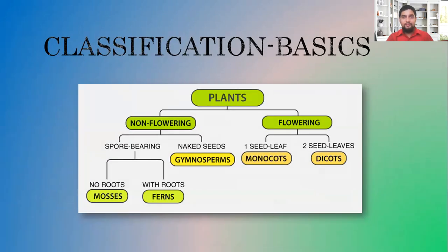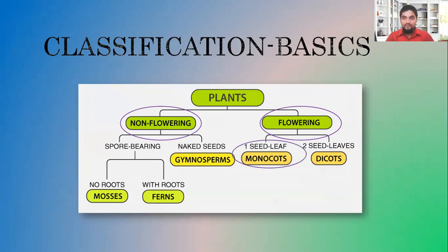We're now going to look at the basics of plant classification. Plants can be divided into non-flowering plants, which do not bear any flower, and flowering plants, which will bear flowers. Our main concern at CSEC Agriculture Science level will be the flowering plants. Flowering plants can be further divided into two groups: monocots, or monocotyledons, and dicotyledons.